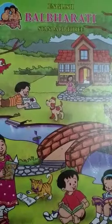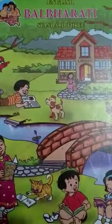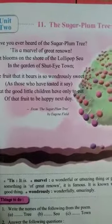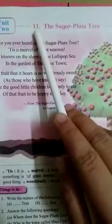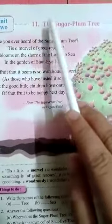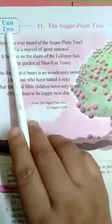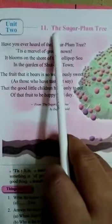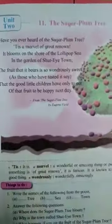Hello everyone, I welcome all of you in today's English session. So children, we are on page number 25. The name of this chapter is 11: The Sugar Plum Tree. We are starting with Unit 2 and this is a poem named The Sugar Plum Tree.